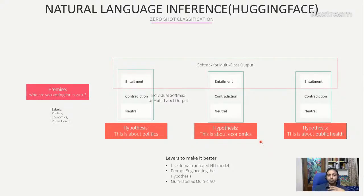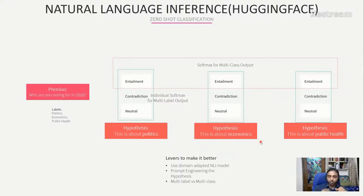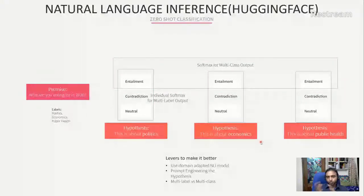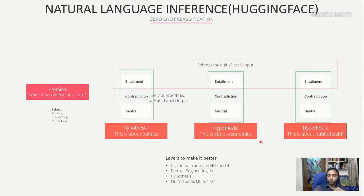This NLI approach is really easy — you'll see it's a single line of code. To improve it: use a domain-adapted NLI model rather than a general one, and do prompt engineering on the hypothesis. The default Hugging Face template is 'This is about {label},' but you can change that to something closer to your task. You can also check whether multi-label or multi-class works better.